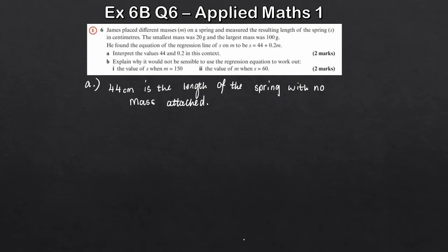Okay, so that's just the 44 dealt with there. But the 0.2, again, that's the gradient. So what we're saying is for every 1g of mass that's attached, the spring increases by approximately 0.2 centimetres. So that's just our two comments there.